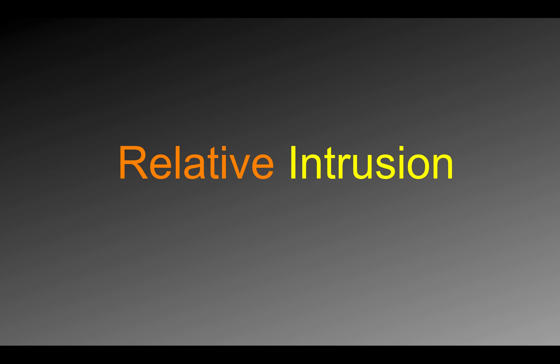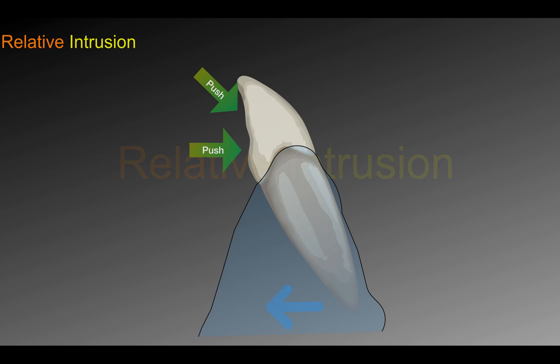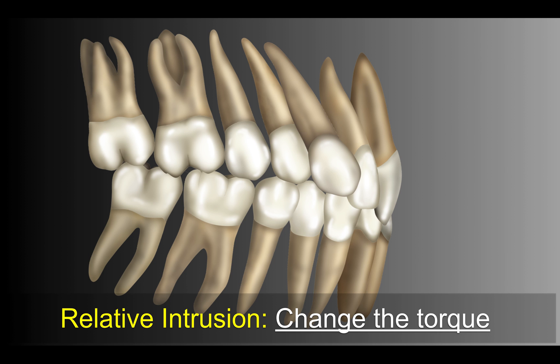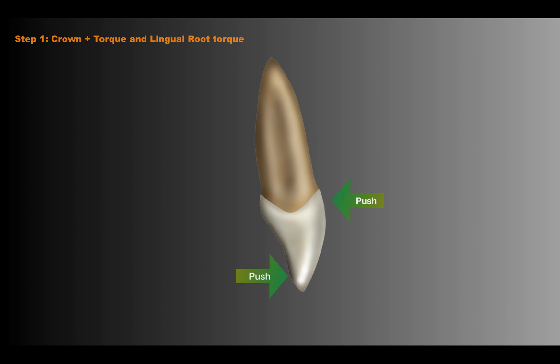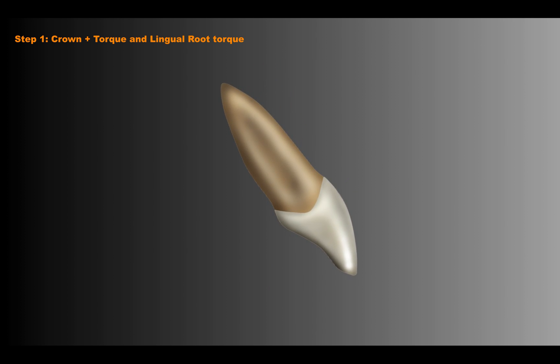The difference with relative intrusion is that in relative intrusion, we are going to first change the torque. In this part where we start changing the torque, we are going to start doing some intrusion. So we are going to do a vertical movement of the tooth and bone, but also change the torque of the incisors — doing something like this. Step one is giving positive torque and then lingual root torque. And once this movement is achieved, then we can start doing the pure movement of the intrusion.